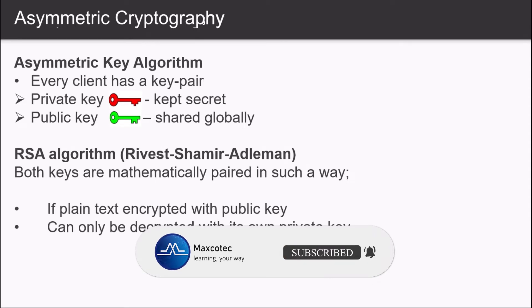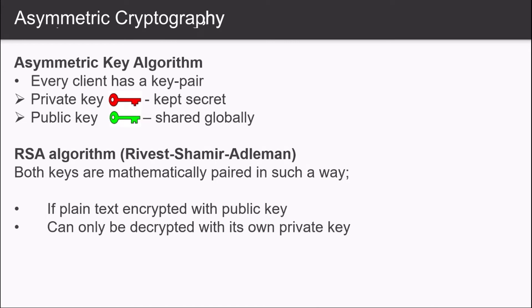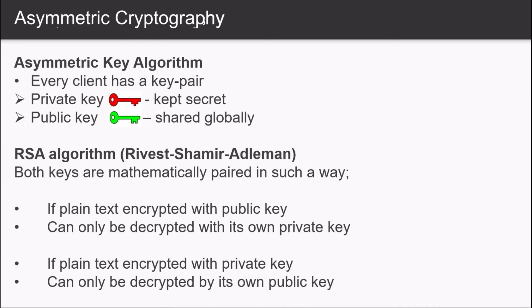Both of these keys are mathematically generated in such a way that if a plaintext is encrypted with the public key it can only be decrypted by its own private key. And if a plaintext is encrypted by its private key it can only be decrypted by its own public key. So these two methods have their own use cases. The first one is used for encryption and the other one is used for digital signature. And most of the times these both are used together for extra security. We will be looking at each of them in the upcoming slides.